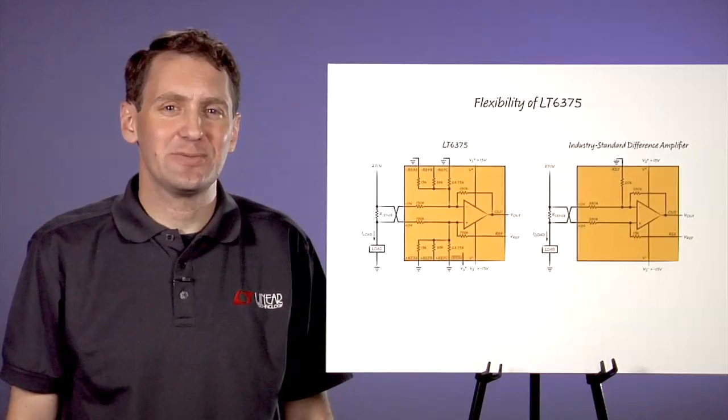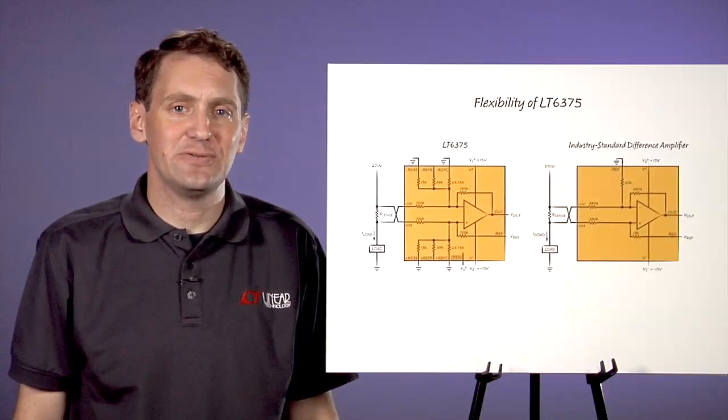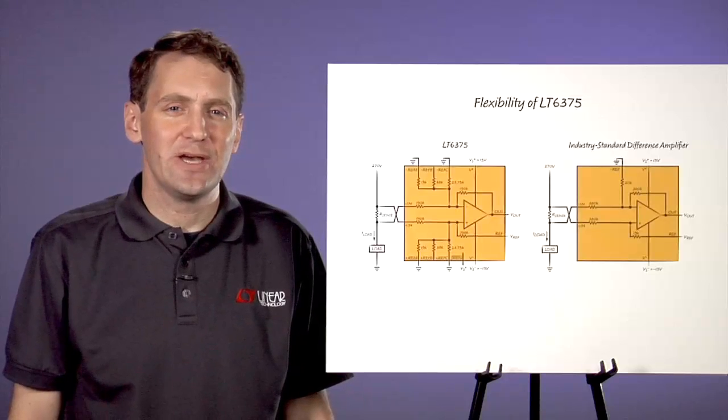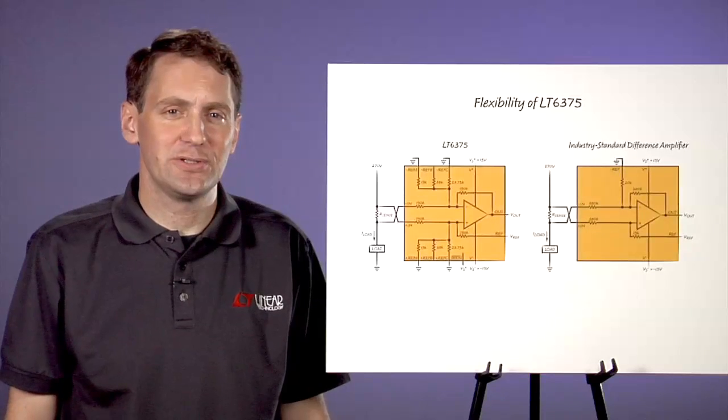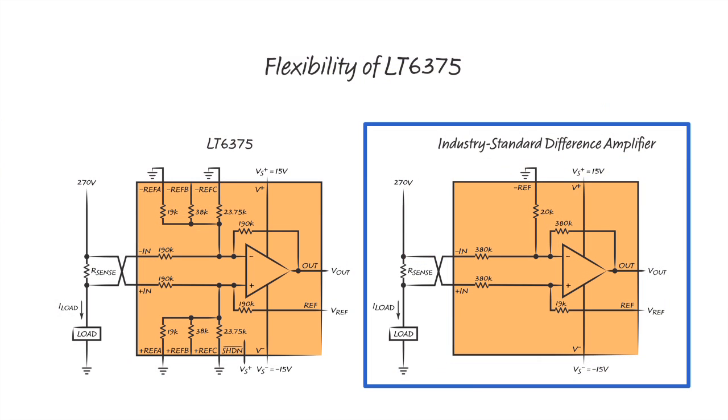Alternative industry standard difference amplifiers lack the accuracy of the LT-6375 and are much less flexible in usage. Prior industry standard difference amplifiers operated with a large common mode input voltage by dividing down the common mode voltage by a factor of about 20. Although this division approach enables measurement of very high common mode voltages, it amplifies the noise and offset of the internal op amp.